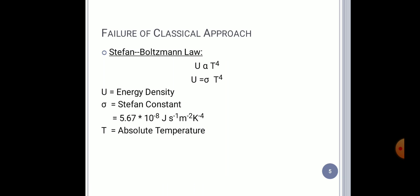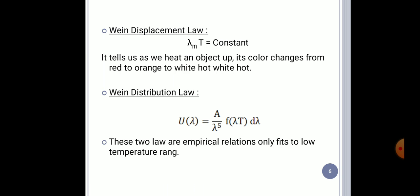Similarly, Wien Displacement Law or Wien Distribution Law states that temperature is inversely proportional to wavelength. The product of temperature and wavelength is a constant. But this condition has the same problem - one side of the spectrum can be explained, the other side cannot. The condition failed.